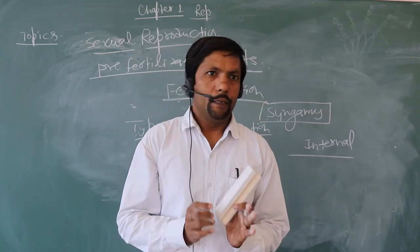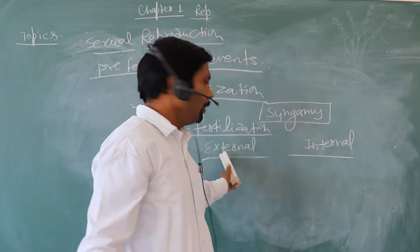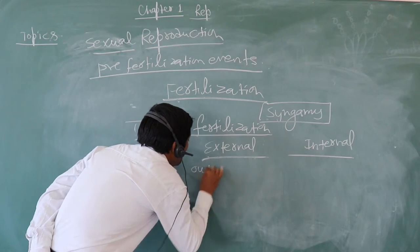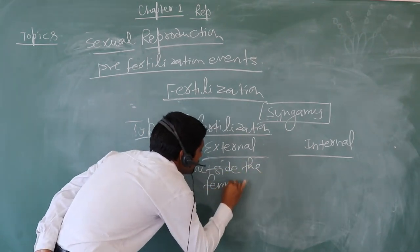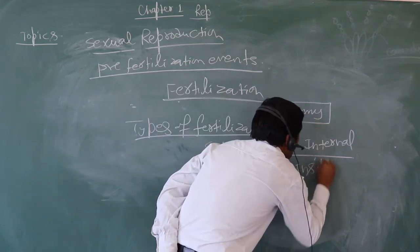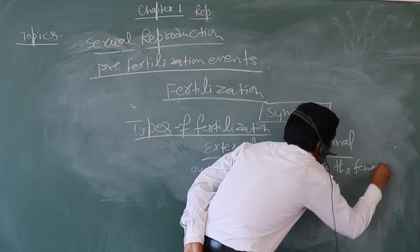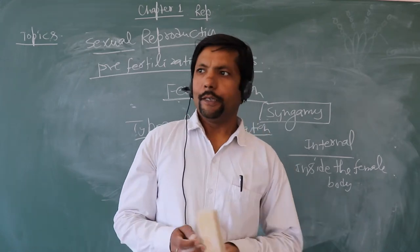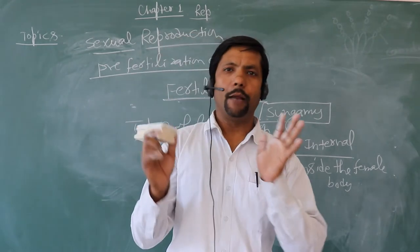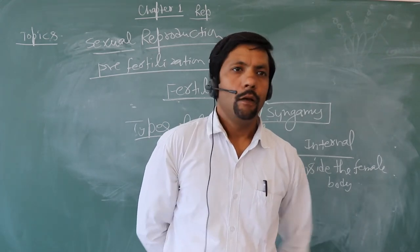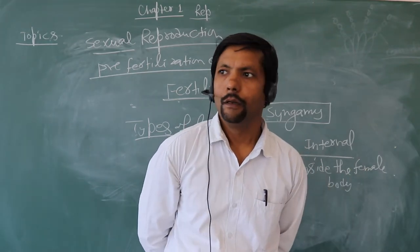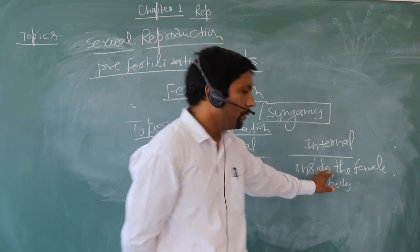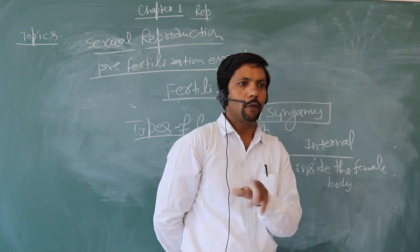In case of external fertilization, more and more gametes must be produced because many of the gametes are destroyed during the journey. So the loss of gametes is more in case of external fertilization, while the loss of gametes is less in case of internal fertilization. This is the key difference between the two types of fertilization.